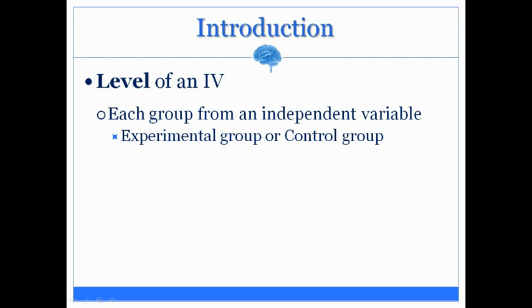So an independent variable, as in this demonstration, has two levels — the experimental versus the control.